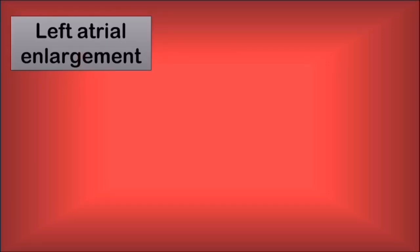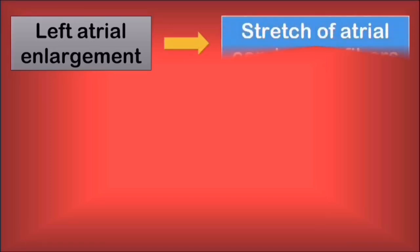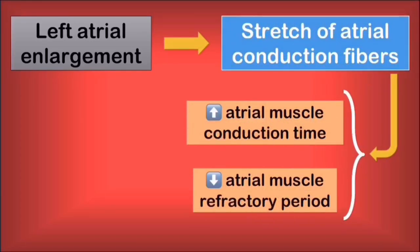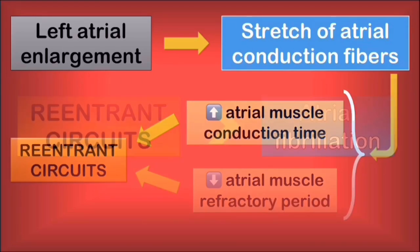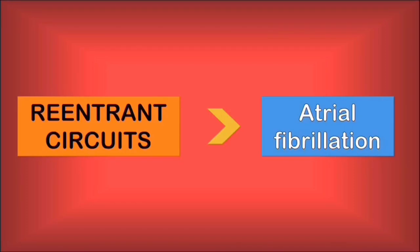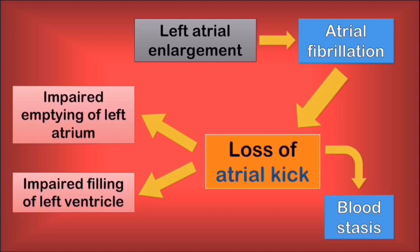Aside from the compressions it causes, the left atrial enlargement will also lead to the stretching of the atrial conduction fibers, leading to increased atrial muscle conduction times and a reduction in atrial muscle refractory period. Basically, impulses will travel slower in the atrium and the fibers will depolarize more easily, causing re-entrance circuits — a major cause for arrhythmias. One such arrhythmia is atrial fibrillation. The chaotic impulses generated make the atria lose their ability to contract efficiently, which translates as a loss of atrial kick. Because blood is no longer ejected properly from the atrium, it will lead to stasis and further impaired filling of the left ventricle, further atrial enlargement, and augmentation of its effects. Atrial fibrillation has some of the same consequences as mitral stenosis, which only aggravates the patient's state.